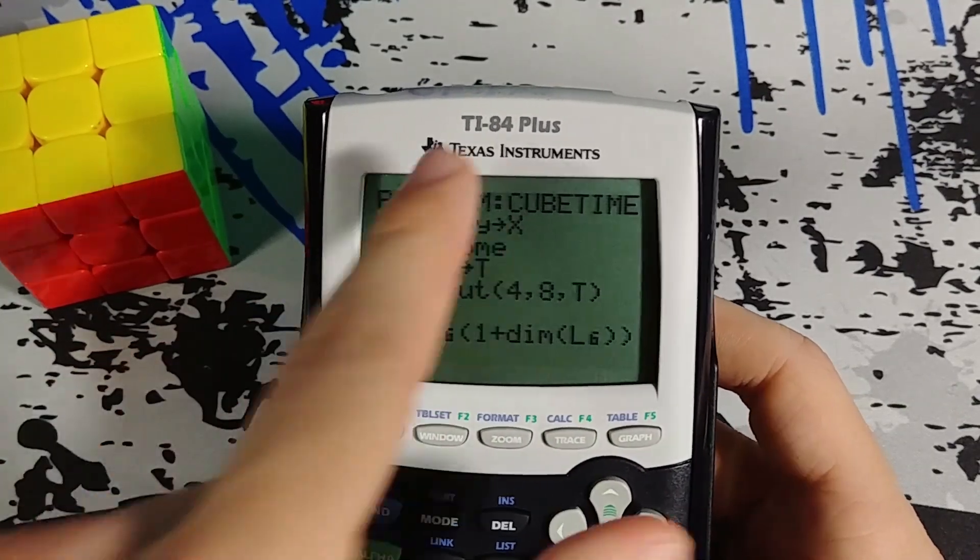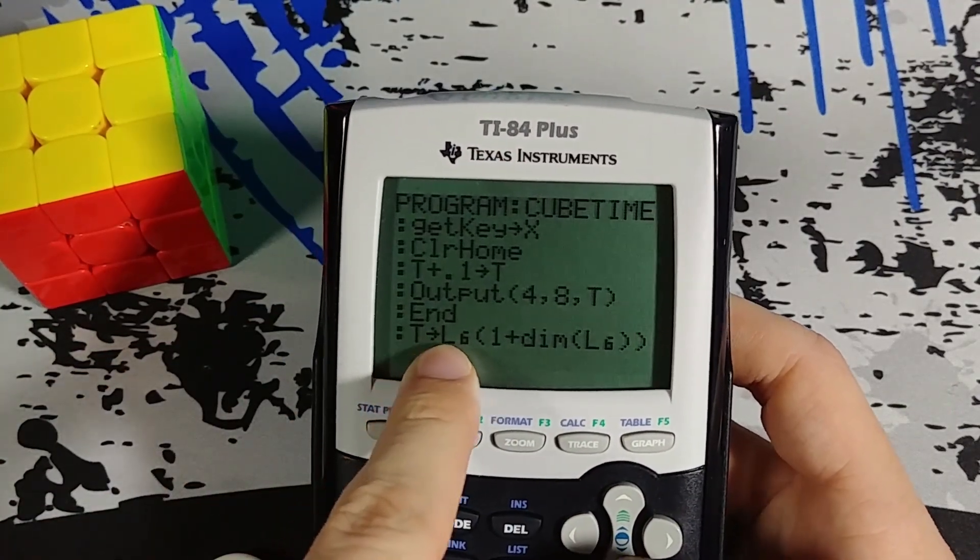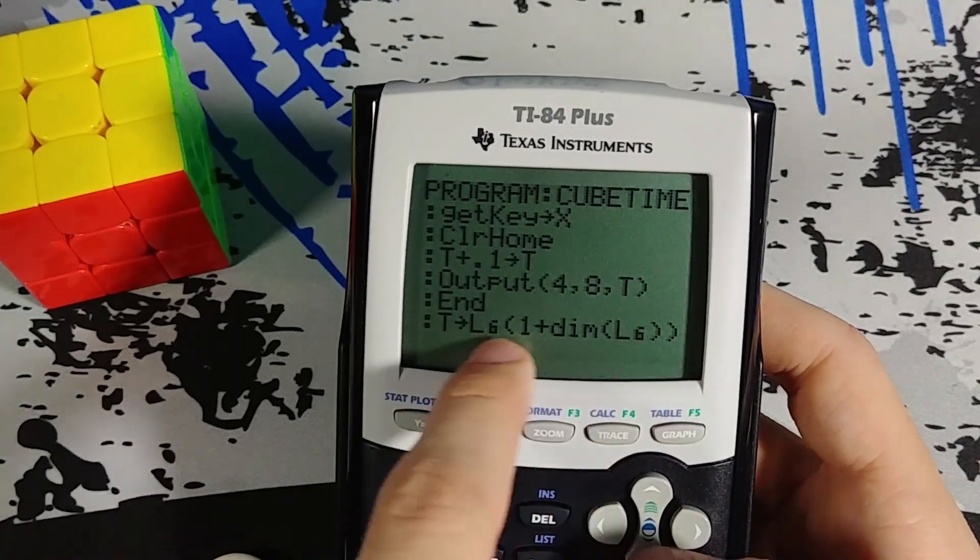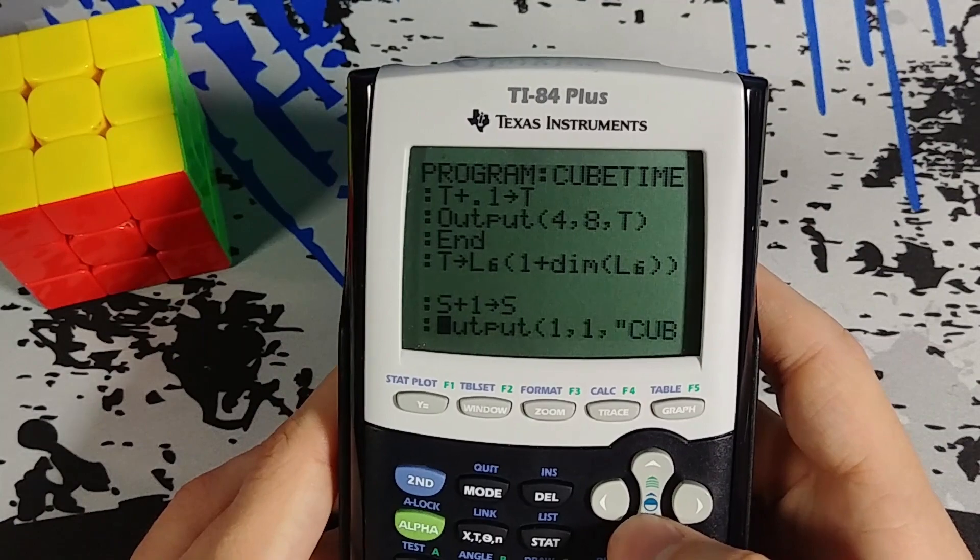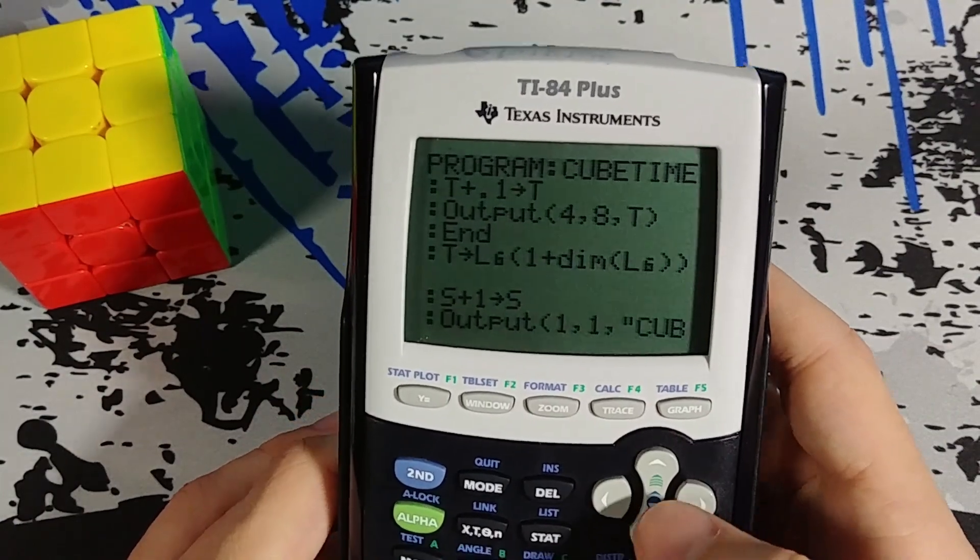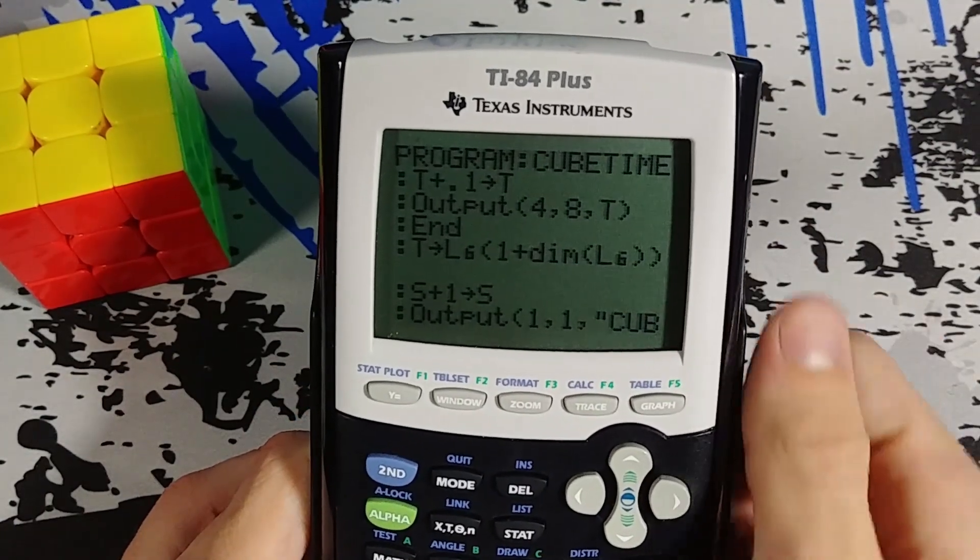And then this I found on the internet. Right here. This adds t to the end of list 6. So pretty useful thing I found online. And then s plus one stores into s. That's adding our total number of solves to go up one.